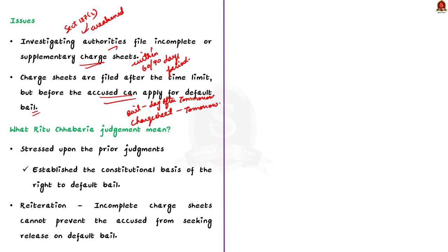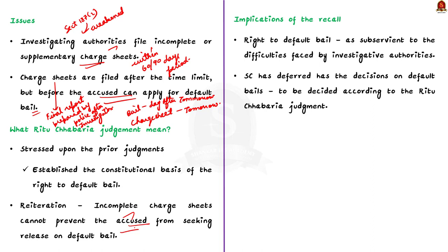A charge sheet is the final report prepared by a police officer or investigative agency after completing their investigation of a case. In the Ritu Chabariya judgment, the court invalidated these illegal practices and clarified that incomplete charge sheets cannot stop the accused from seeking default bail. The court emphasized that the preliminary or incomplete nature of police reports indicates that the investigation is not complete. The Ritu Chabariya judgment simply reiterated prior judgments that established the constitutional basis of the right to default bail.